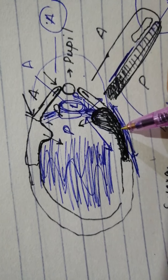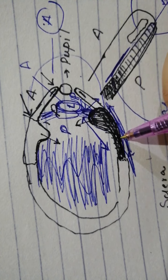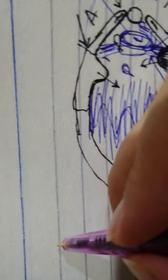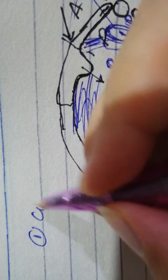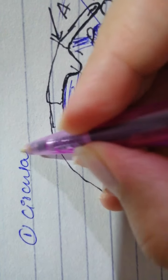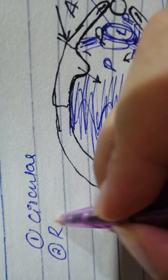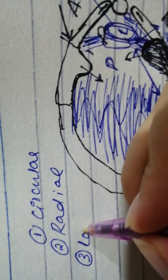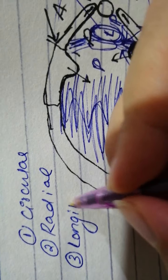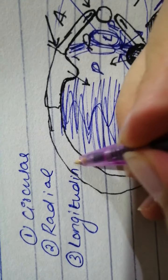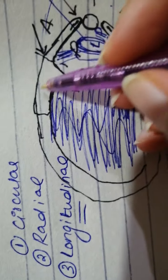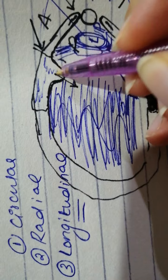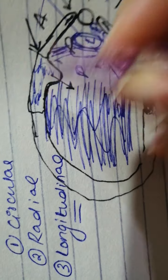The ciliary body is again it's mostly muscle and the muscles are in three arrangements. Circular, radial and longitudinal arrangement. And you can kind of show it all over the place like this.